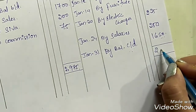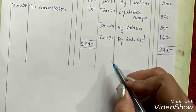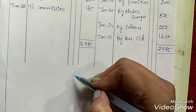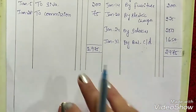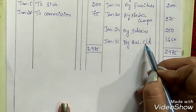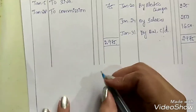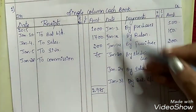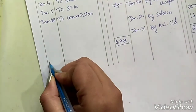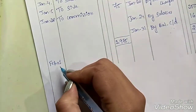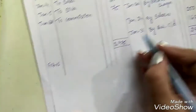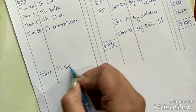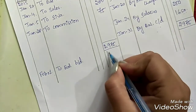The closing balance of this month will be the opening balance of the next month. Since we recorded for the month of January, write the same amount on the debit side for February 1st — to balance brought down, Rs. 1650.